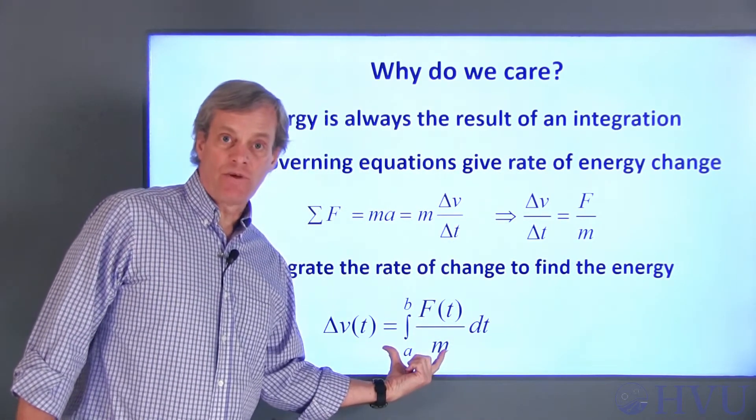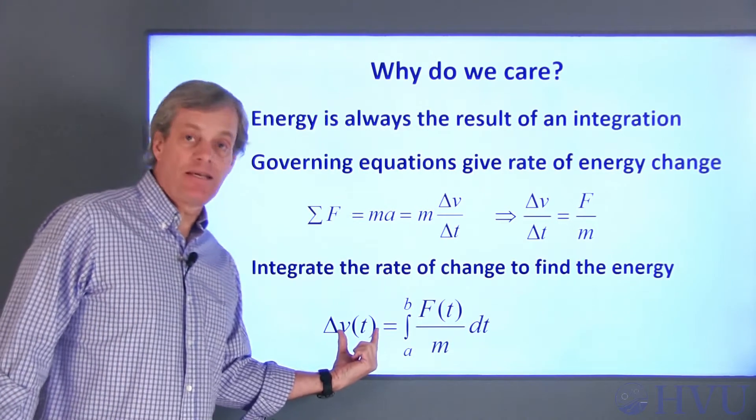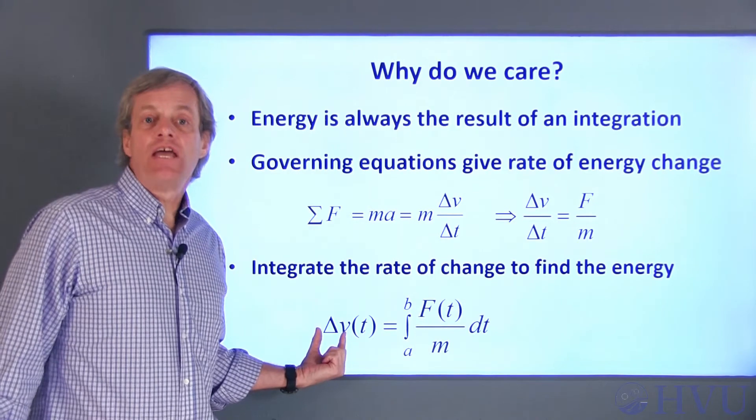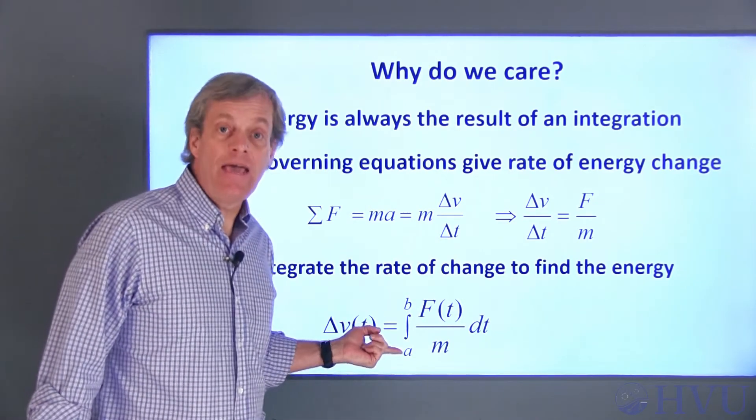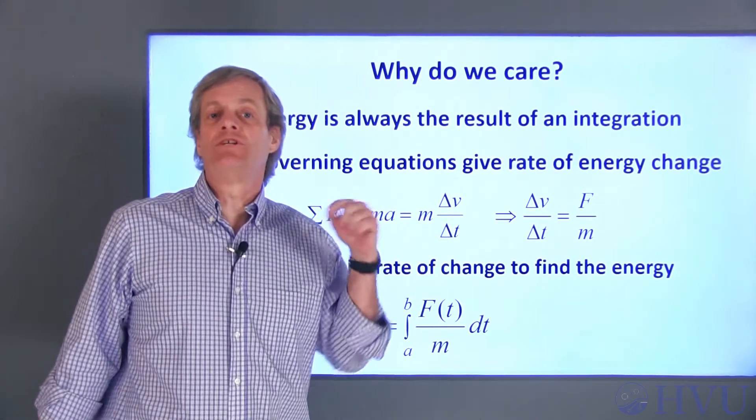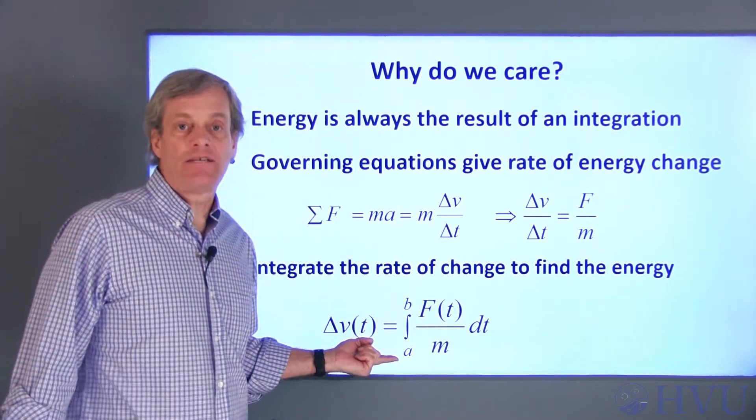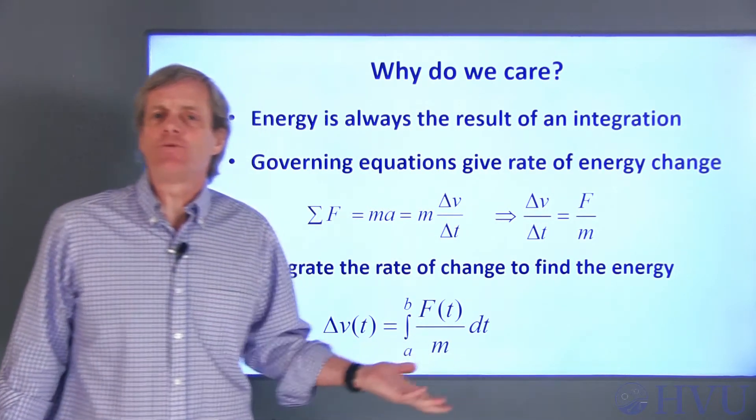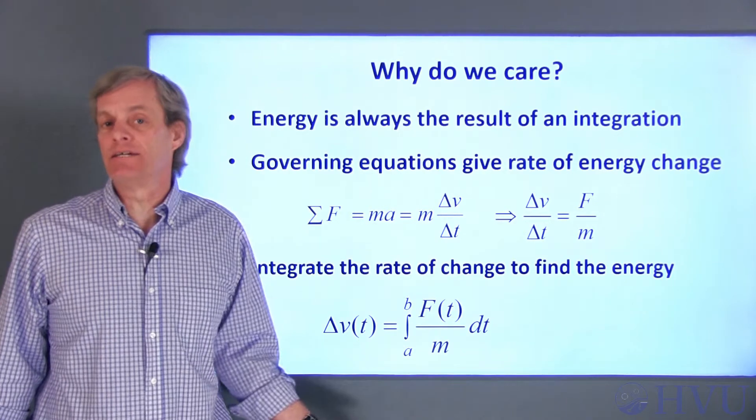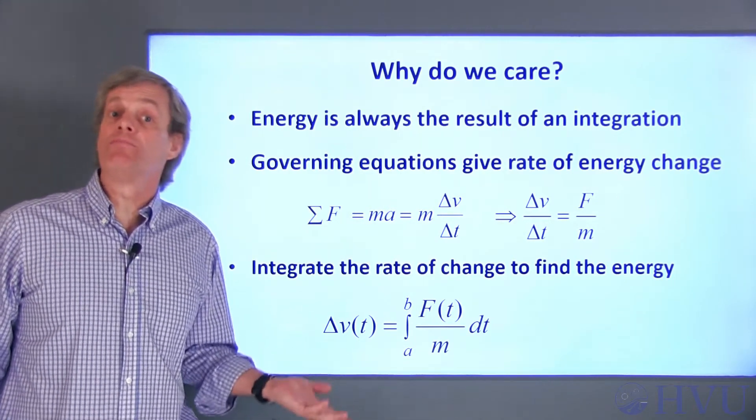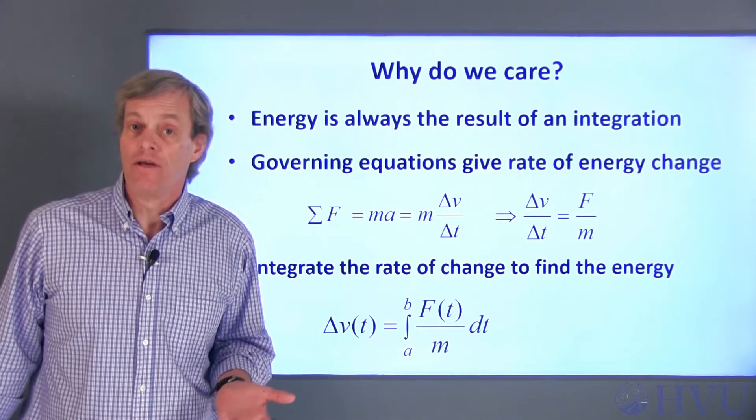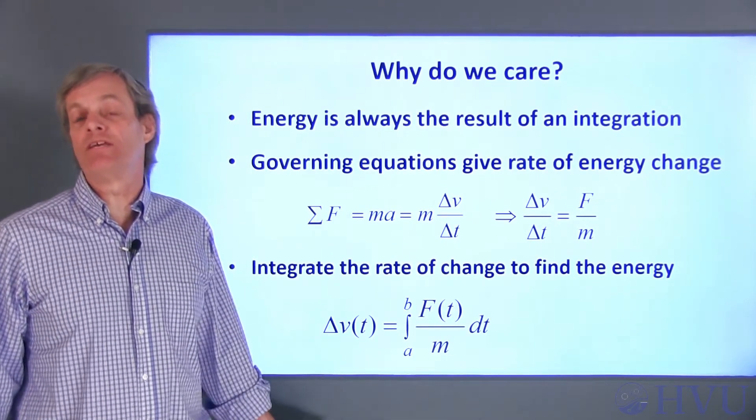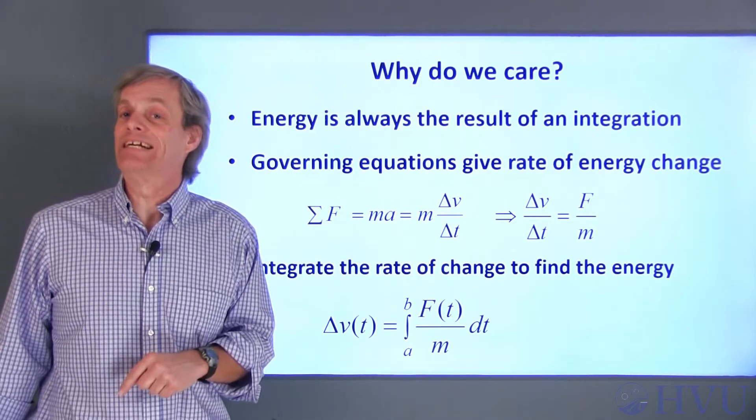By integrating this derivative, we can recover the mass's velocity, which gives us the kinetic energy in the mass. Notice that this is actually a change in velocity between two times, A and B. In order to determine the actual velocity, we need to know the velocity of the mass at time A when we begin the integration process. That's what I meant earlier when I said that the integration undoes a differentiation process, with the possible exception of an unknown constant. This unknown constant is called an integration constant, and it can't be determined from the integration itself. You need what is called an initial condition.